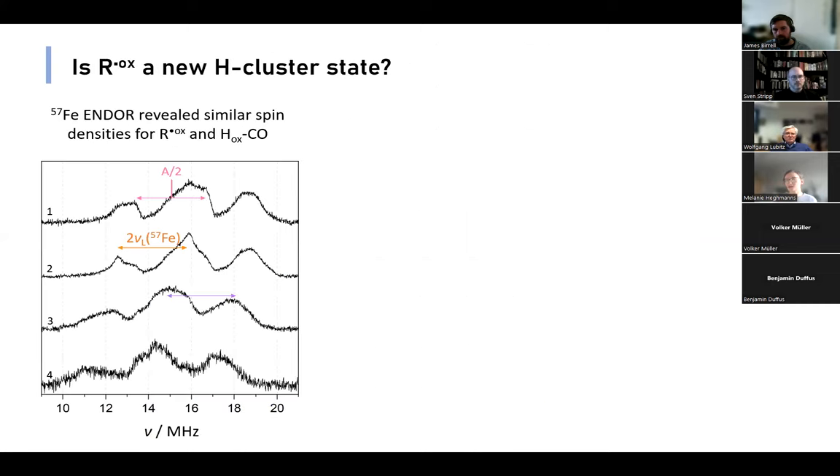At this point, we were quite intrigued and asked ourselves, is R^ox actually a new H-cluster state? This is supported as our 57Fe ENDOR revealed similar spin densities for R^ox and H-ox-CO. Also, you may have heard the beautiful talk during the hydrogenase lecture series, where they also observed the signal we termed R^ox, and it shows that it has 57Fe ENDOR couplings to the di-iron subsite of the H-cluster.